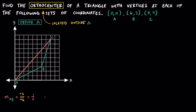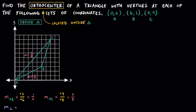We now have the slope of one side of the triangle; we just need the slope of one other side. Let's take advantage of the fact that point A is located at (0, 0) and find the slope of segment AC. From point A to point C, the vertical change is positive 9 units and the horizontal change is positive 8 units, so the slope of segment AC is 9/8. Since the slope of AB is 1/2, its altitude has the opposite reciprocal slope of negative 2. And the altitude of segment AC has the opposite reciprocal slope of negative 8/9.